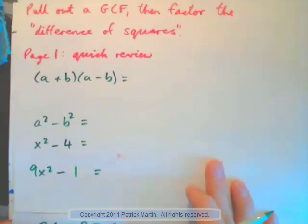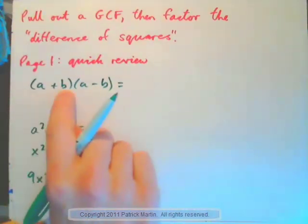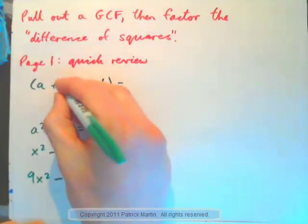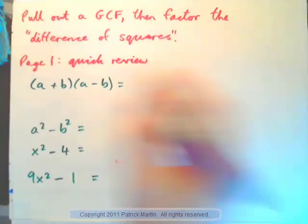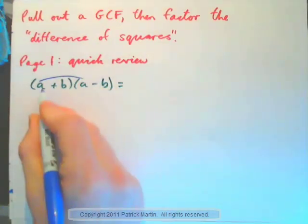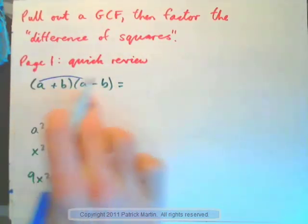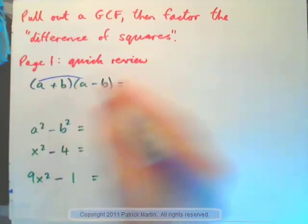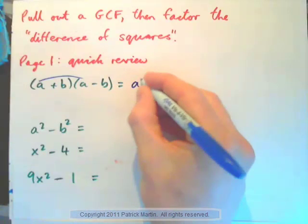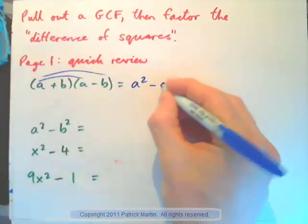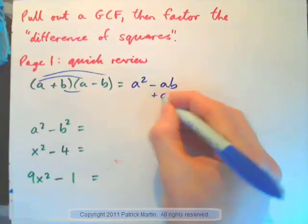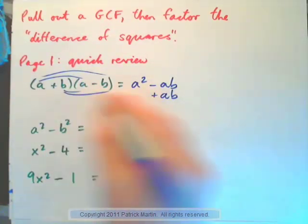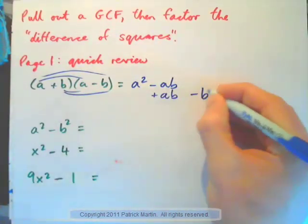To begin, write this down and do it. A plus B times A minus B — what does that give you? Just quickly remind yourself that if you multiply two numbers added together times the same number subtracted, you will get A squared minus AB, and then B times A is plus AB, and B times negative B would be minus B squared.